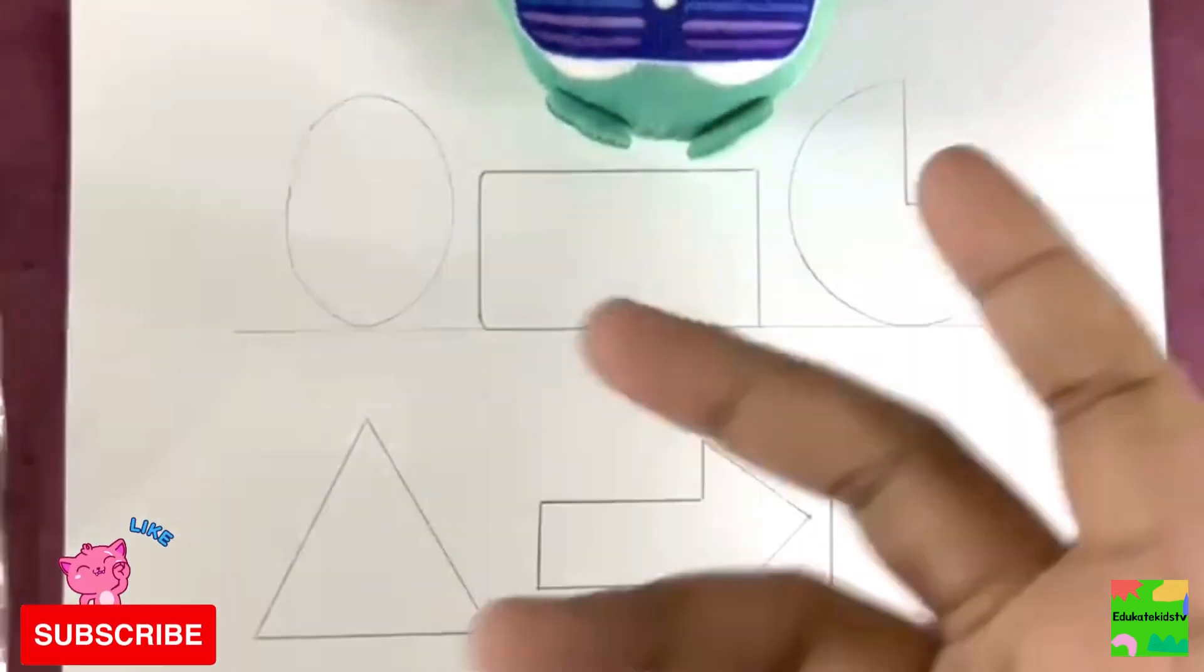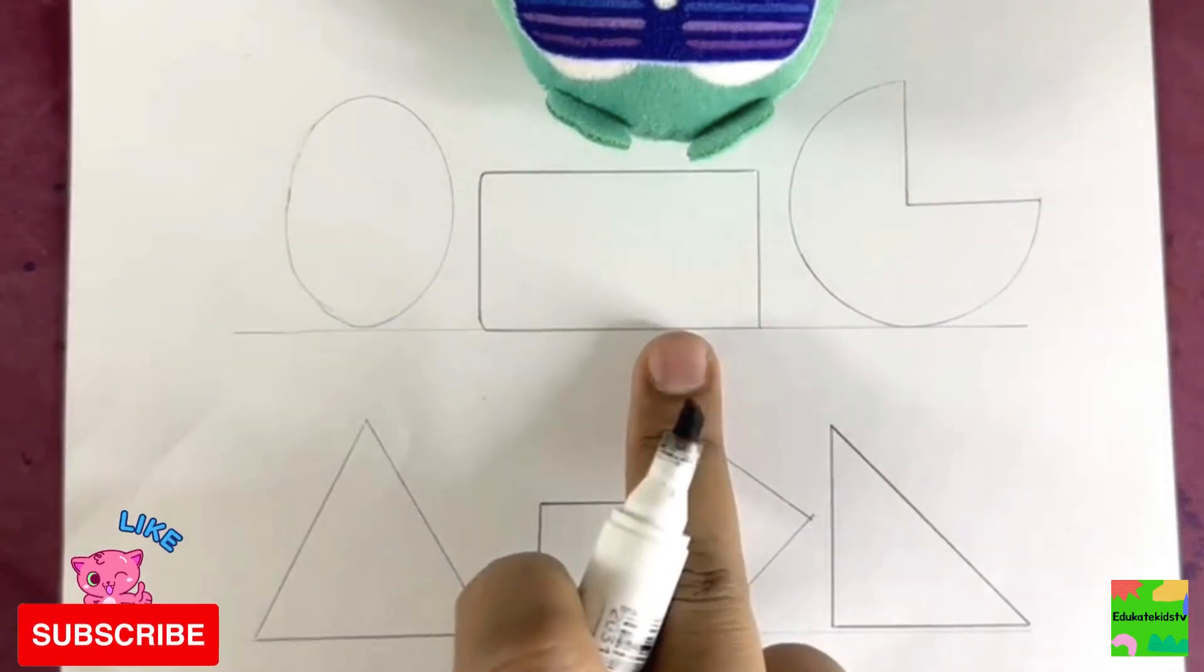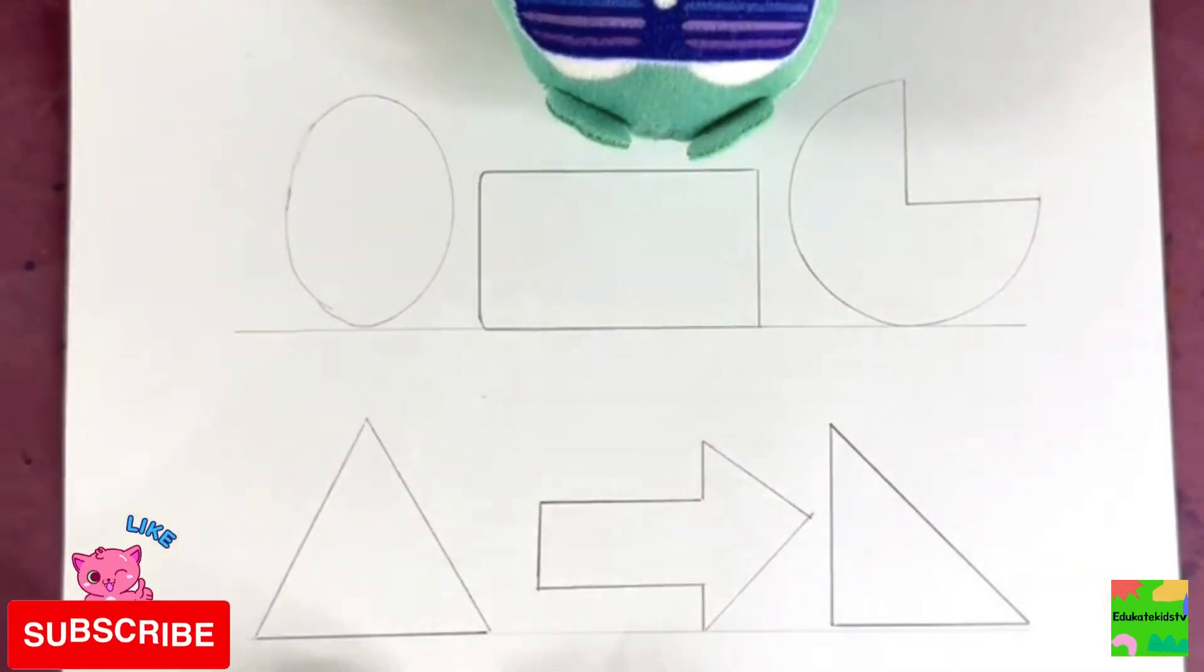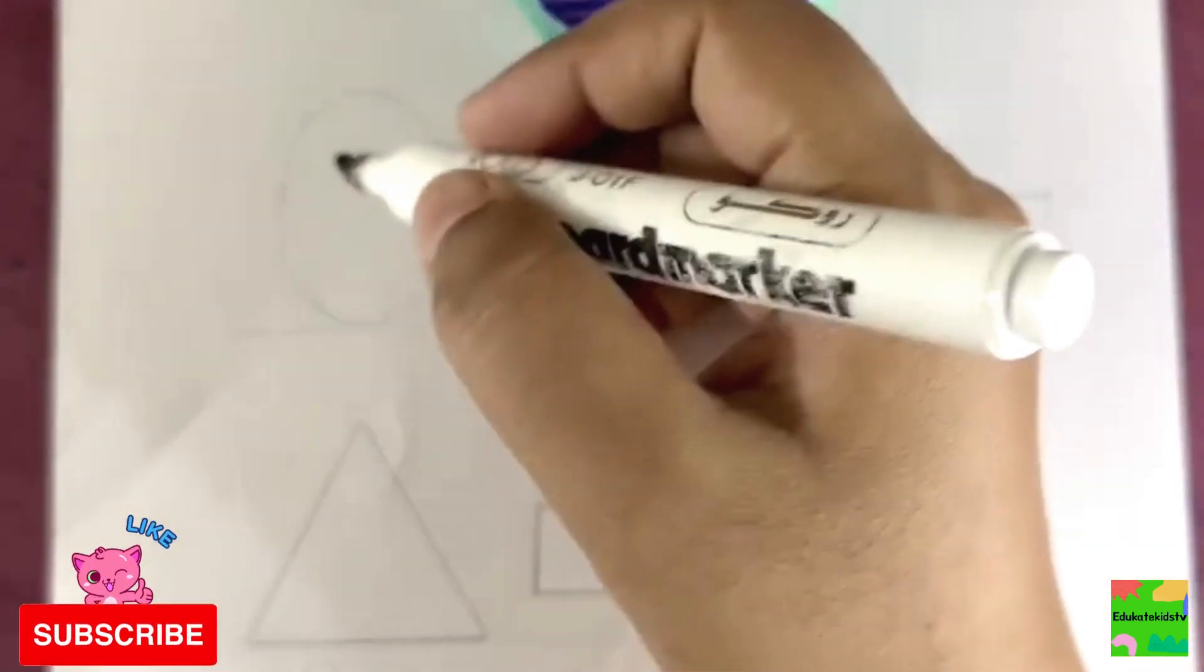Hello kids, how are you all? Good. Okay, let's learn some shapes today: oval, rectangle, pie, triangle, arrow, right angle triangle. Great, now let's draw them.